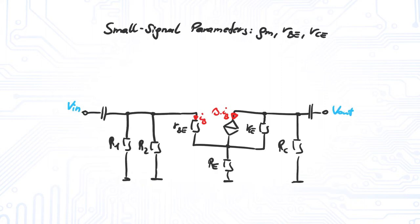This way we get information like the input impedance, output impedance, and voltage gain of our amplifier.